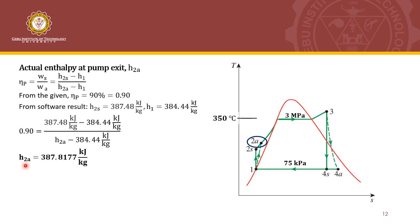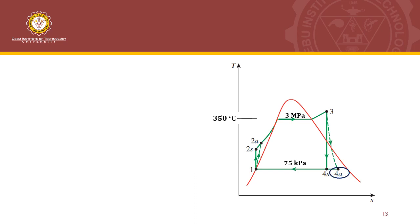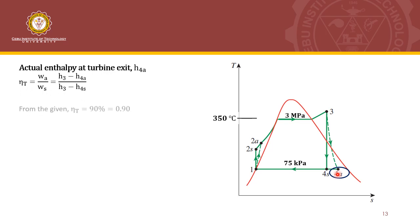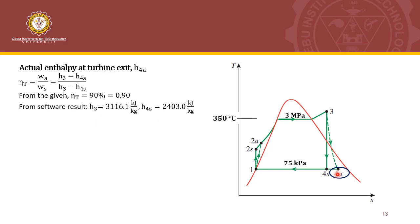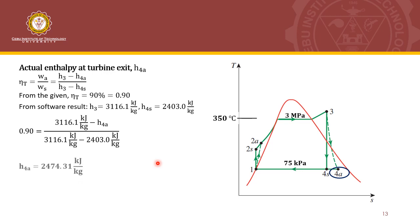Similarly, we get the actual enthalpy at the turbine exit, H4A, using the turbine isentropic efficiency relationship. The turbine isentropic efficiency is 90% or 0.9. From the software, H3 is 3,016.11 kJ per kg and H4S is 2,403 kJ per kg. Plugging those values into the formula and solving, H4A is 2,474.31 kJ per kg. Comparing H4S and H4A, the value of H4A is greater, consistent with turbine irreversibility.